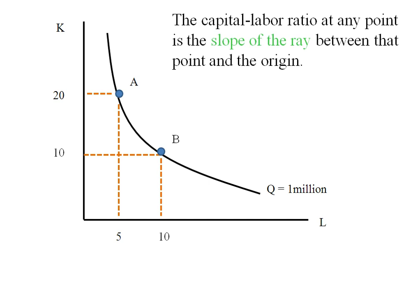The capital-labor ratio at any point is going to be the slope of the ray between that point and the origin. Here I have a ray between the origin and point A, and the slope of the ray is going to be rise over run, or 20 over 5. So at A the capital-labor ratio is 4.